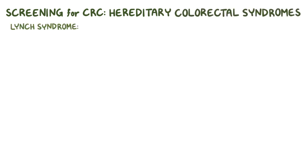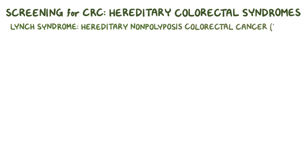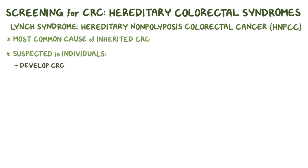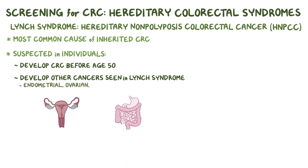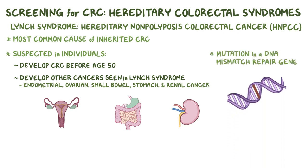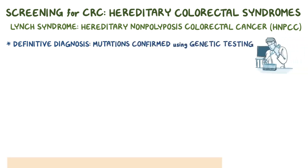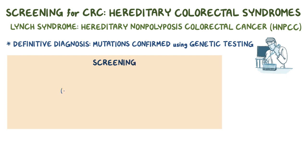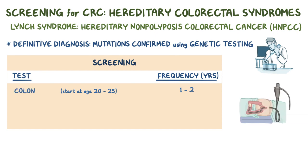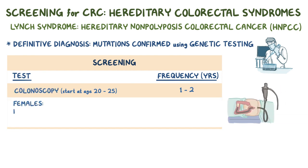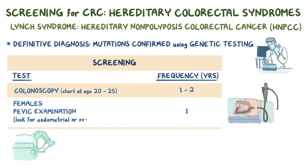Lynch syndrome, also called hereditary nonpolyposis colorectal cancer or HNPCC, is the most common cause of inherited CRC. It should be suspected in individuals that develop CRC before age 50, or develop other cancers typically seen in Lynch syndrome like endometrial, ovarian, small bowel, stomach, and renal cancer. Lynch syndrome is caused by a mutation in a DNA mismatch repair gene or the EPCAM gene. For a definitive diagnosis, mutations need to be confirmed using genetic testing. Screening begins at age 20 or 25 every one or two years using colonoscopy, and females with Lynch syndrome should also get a pelvic examination annually to look for signs of endometrial or ovarian cancer.